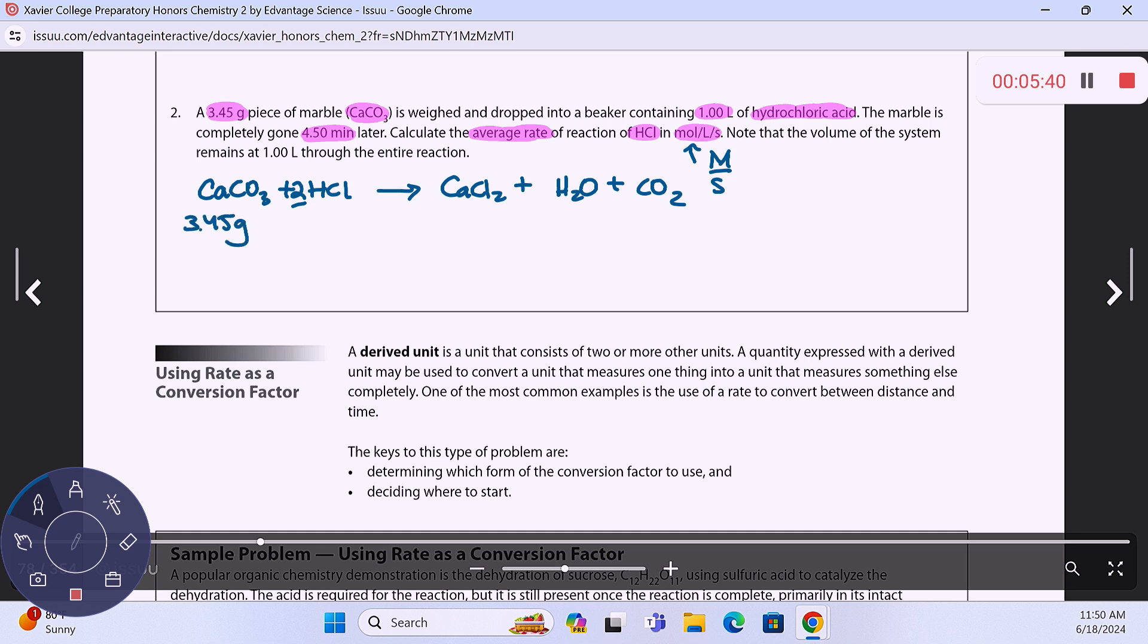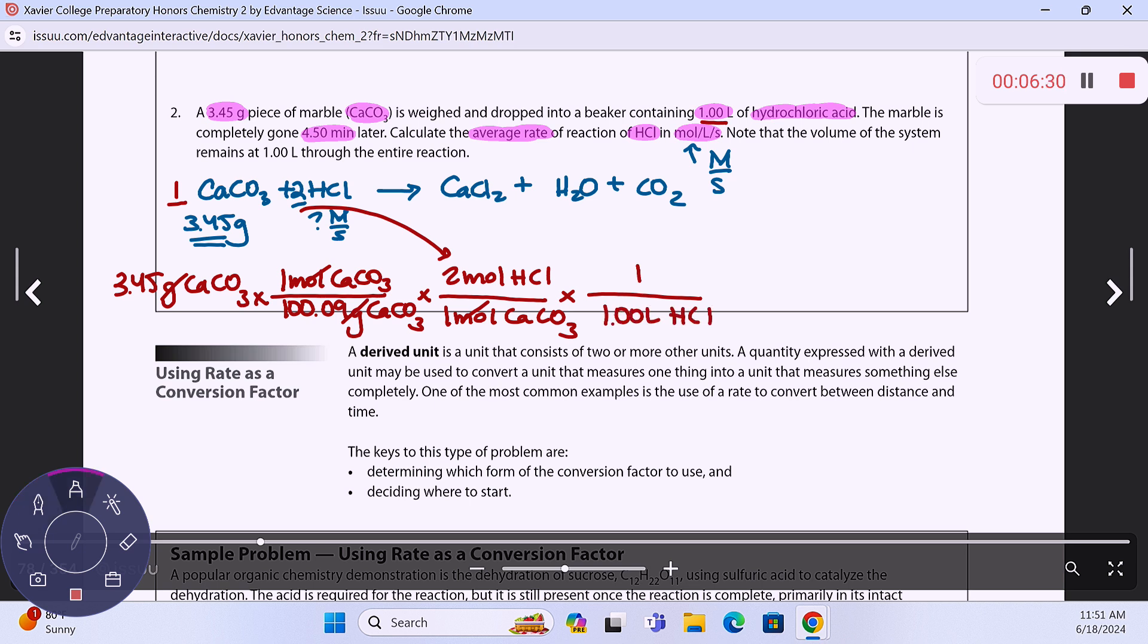You have 3.45 grams of the marble, and they want to know this in molarity per second. So I have to start here with my calcium carbonate: 3.45 grams of calcium carbonate, convert it to moles by dividing by the molar mass. Its molar mass is 100.09. Your coefficient is a 1. Your coefficient here is a 2 on the HCl. So grams cancel, moles cancel. And then the volume that we have of hydrochloric acid is a liter. So this is 1 over 1.00 liters of HCl. That will give you moles of HCl per liters of HCl, which is molarity.